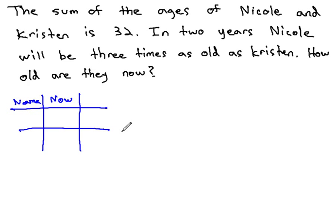We're told the sum of the ages of Nicole and Kristen is 32. Let's fill in the names right now, Nicole and Kristen. In 2 years, Nicole will be 3 times as old as Kristen. How old are they now?